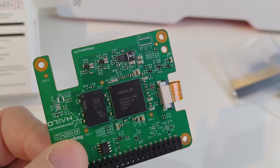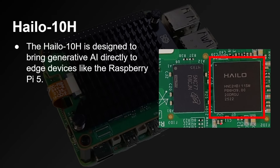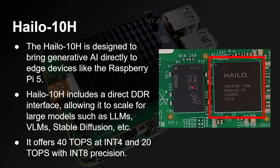At the heart of the AI Hat Plus 2 is the Hailo 10H AI Accelerator. The Hailo 10H is designed to bring generative AI directly to edge devices like the Raspberry Pi 5, making it different from the Hailo 8 in the previous AI Hat. The big thing is the Hailo 10H includes a direct DDR interface, allowing it to connect DDR RAM and scale up for much larger models — large language models, large vision models, stable diffusion and so on. It offers 40 TOPS at INT4 and 20 TOPS at INT8. At INT8 it's slightly slower than the Hailo 8, but at INT4 it's faster — and this board is aimed at INT4 quantized four-bit large language models.